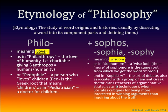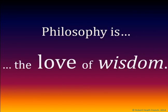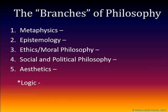So we can define philosophy as the love of wisdom, but it's also interested in things like truth and a number of other areas. We're going to use the language of branches to refer to the traditional areas of philosophy: metaphysics, epistemology, ethics or moral philosophy, social and political philosophy, and finally aesthetics. Let's go through each of them in turn.